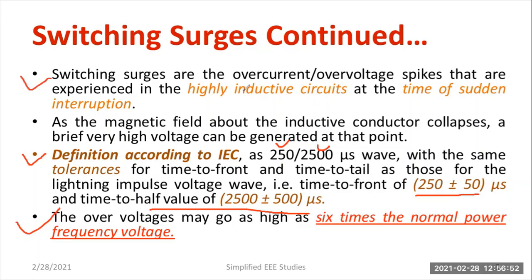Switching surges may be overcurrent or overvoltage — expressed in terms of voltage or current — as spikes experienced in highly inductive circuits at the time of sudden interruption. The theory behind this: as the magnetic field about the inductive conductor collapses, a brief very high voltage can be generated. This is the basic theory behind how switching surges are produced.